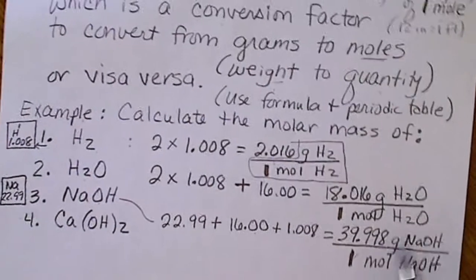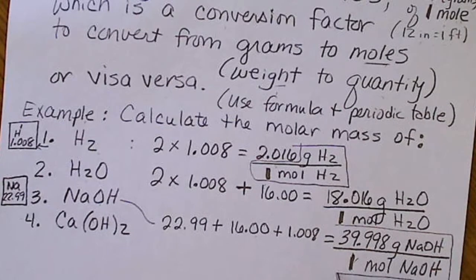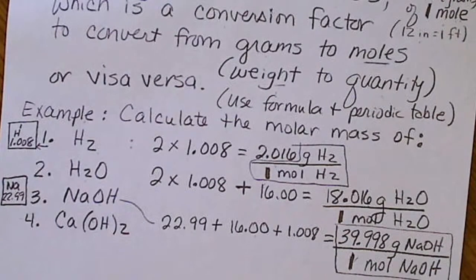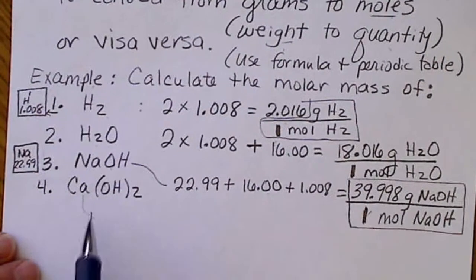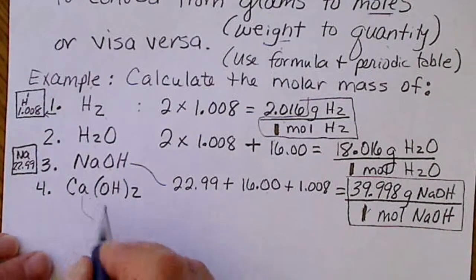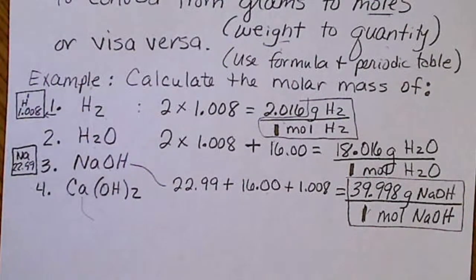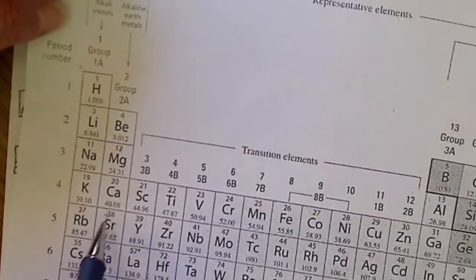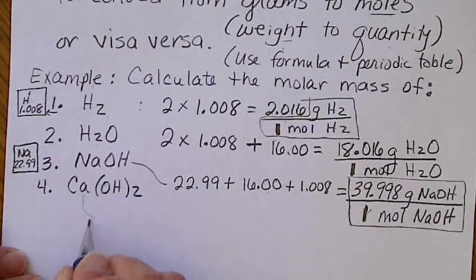The molar mass is supposed to look like a conversion factor. However, for calcium hydroxide, if we come up with a molar mass for calcium hydroxide, calcium weighs 40.08. We see that on the periodic table. There's one calcium.